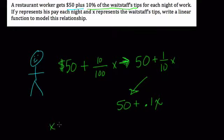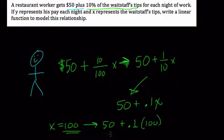For example, if the staff makes $100 in tips, you're getting 10% of that. So that means you're getting 50, the initial amount, plus 10% or 0.1 of 100. And that's just what? Well, 10% of 100 is 10, plus 50. You would, in this case, make $60.